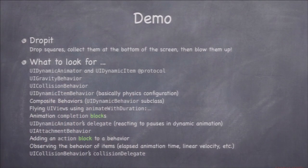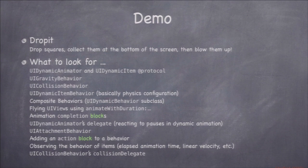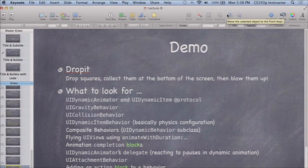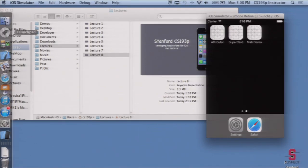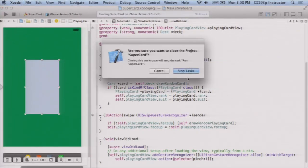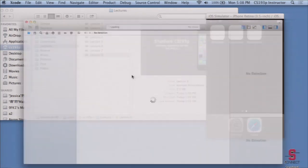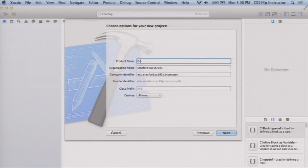Now let's do the demo, called Drop It. I'm basically going to drop square views down and they'll collect at the bottom. When a whole row collects, I'll remove them — kind of like Tetris. I'll show you everything I can about animation in this demo. We're going to create a new project called Drop It, and I'll call the view controller Drop It as well.